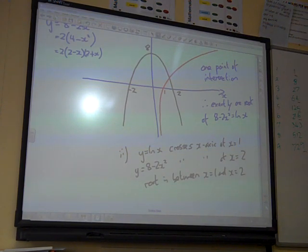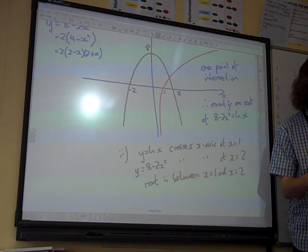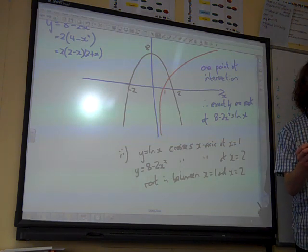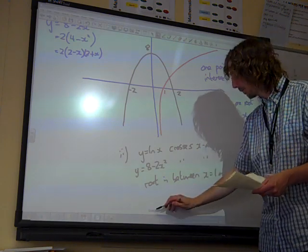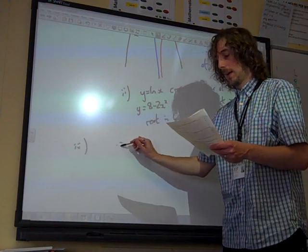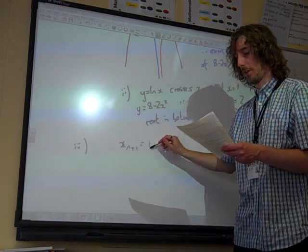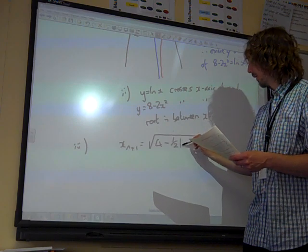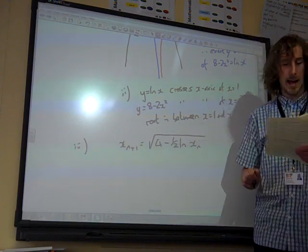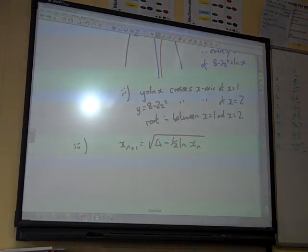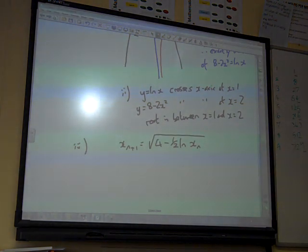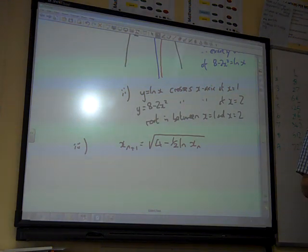Now we're into actually doing some stuff with this. Use the iterative formula. It's quite nice that they've given you the iterative formula that we're going to use. x_n+1 is the square root of 4 minus one half natural log of x_n with a suitable starting value to find the root. And remember what we're going to do with this is we're going to use our calculator, aren't we, and do the thing where it repeats the answer. Suitable starting value.